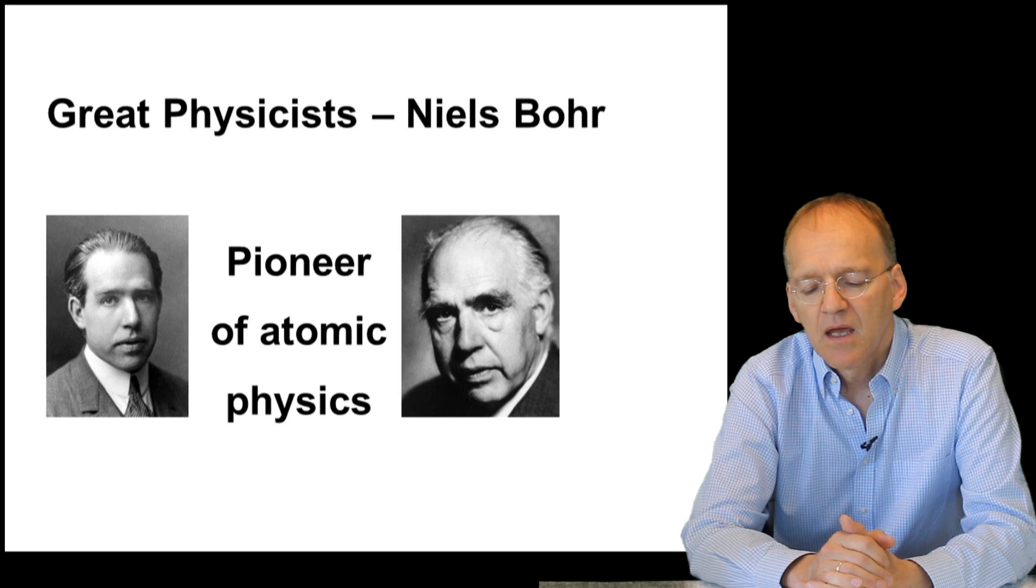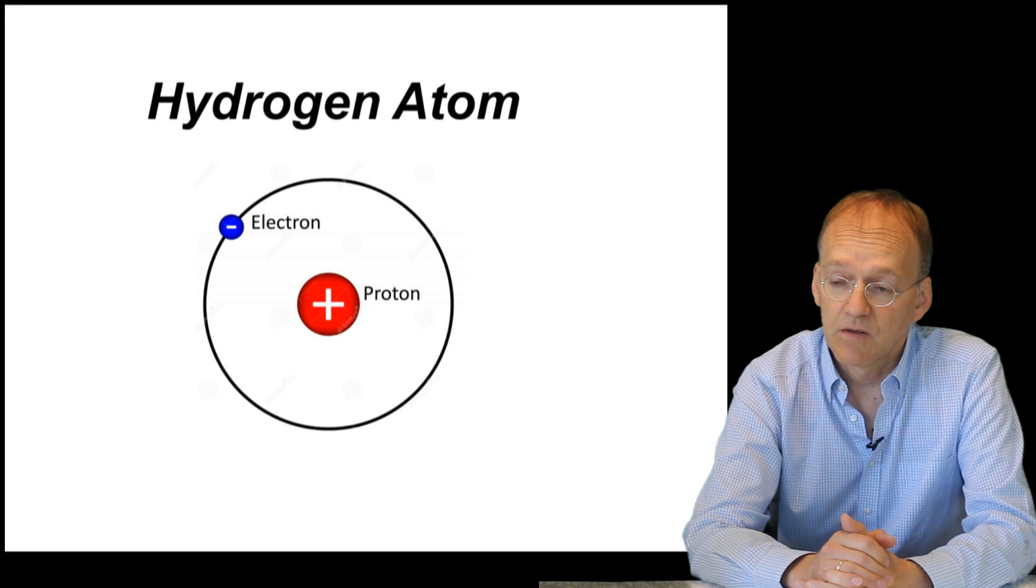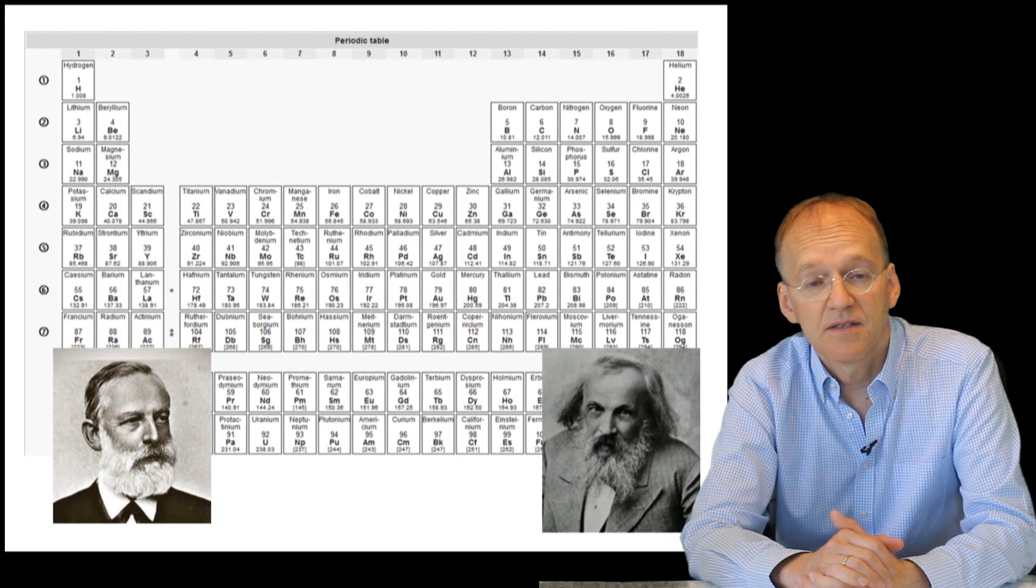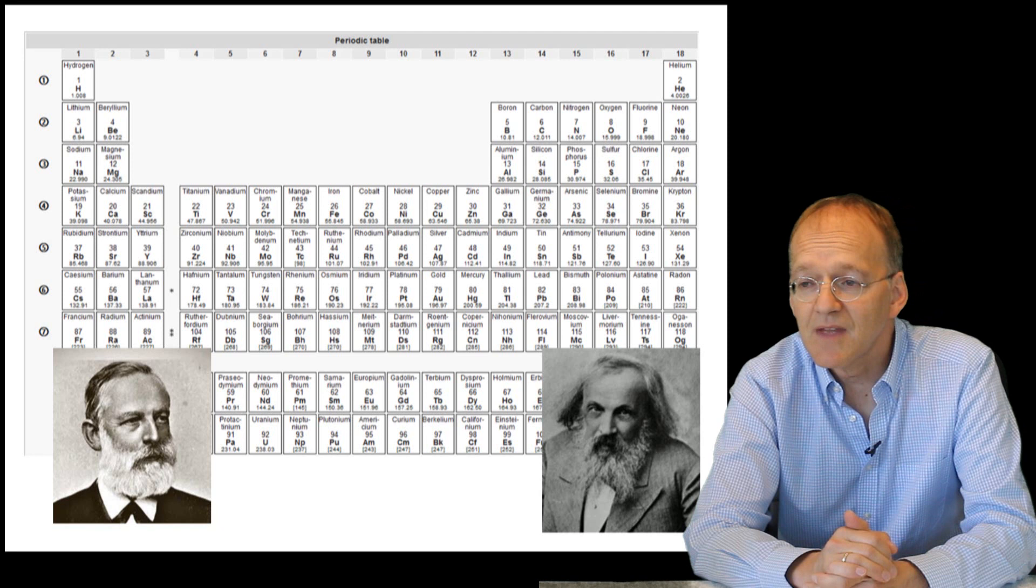Everyone knows that the number of electric charges in the nucleus, the number of protons, determines the chemical element. So the entire system of chemical elements, the periodic table discovered by Mendeleev and Meyer in the 1860s, it just boils down to counting protons.